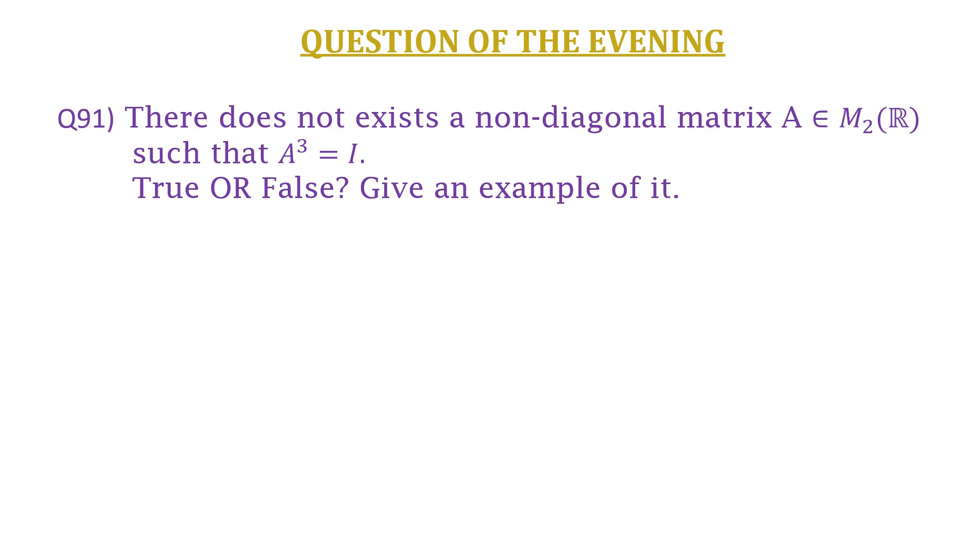In this video, we are going to discuss a question of linear algebra. The question is: there does not exist a non-diagonal matrix A belongs to M₂(R) such that A³ equals I. Whether this statement is true or false, give an example of it.